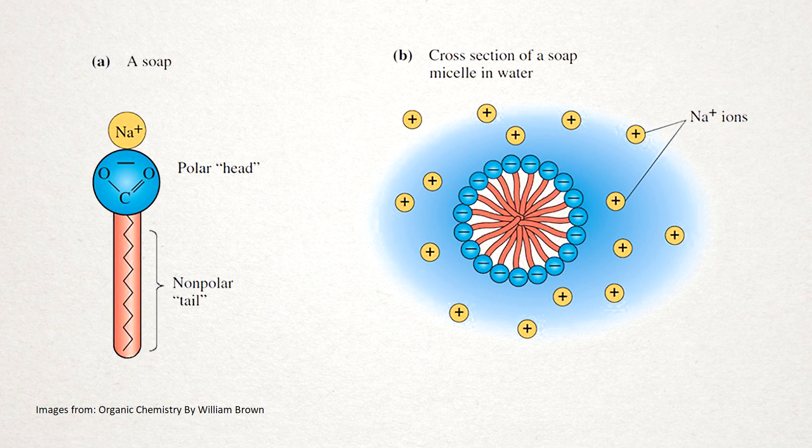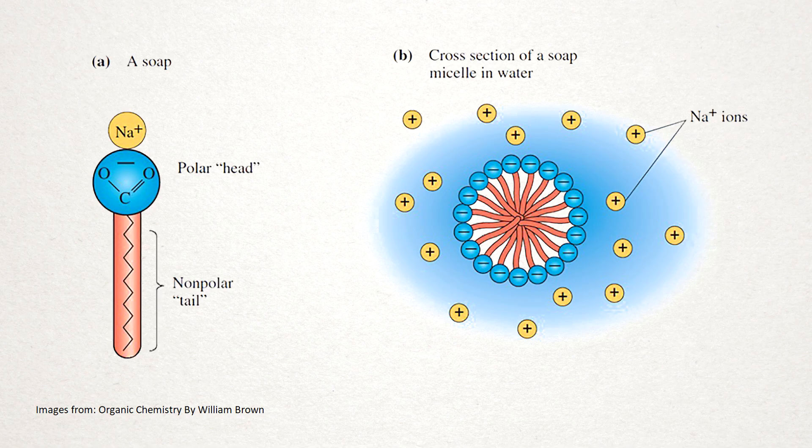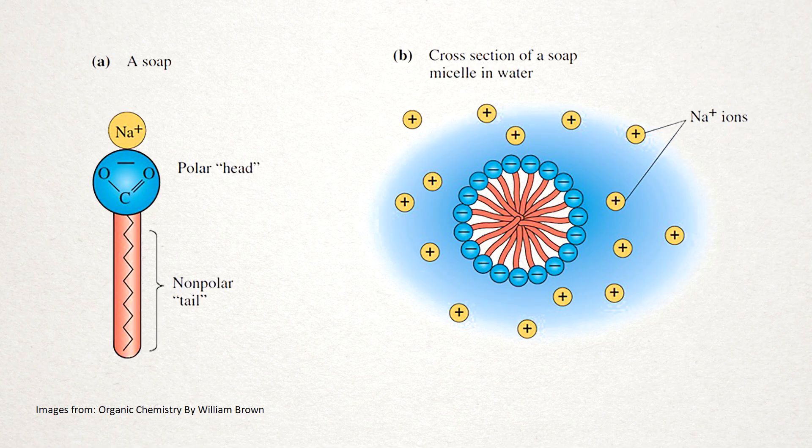When soap is shaken with water, the molecules arrange themselves into spherical structures called micelles. The hydrophilic and polar heads are on the outside in contact with the water, and the non-polar tails are shielded on the inside. The micelles are not technically dissolved in the water, and they exist as a colloid, which is a very finely dispersed suspension.